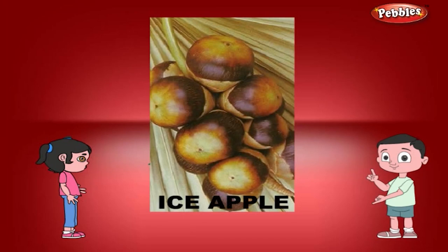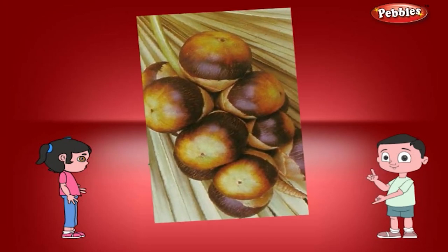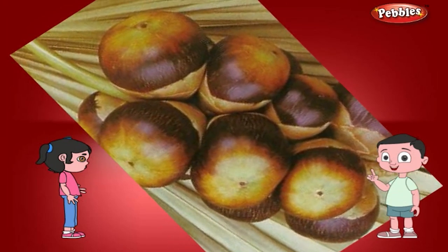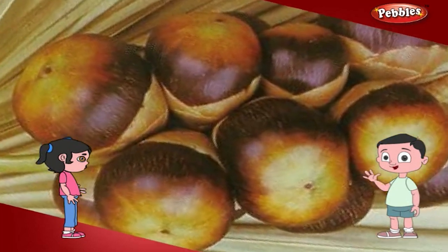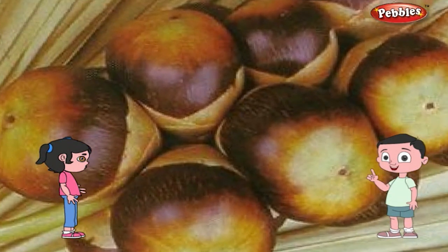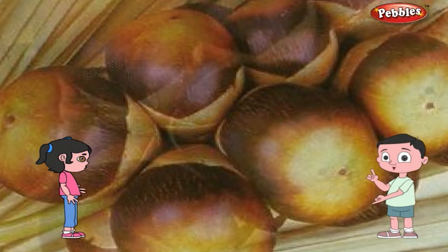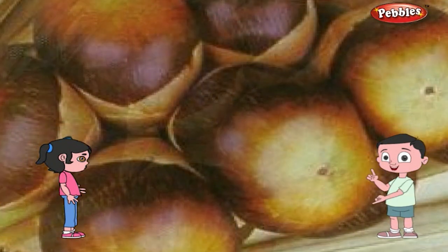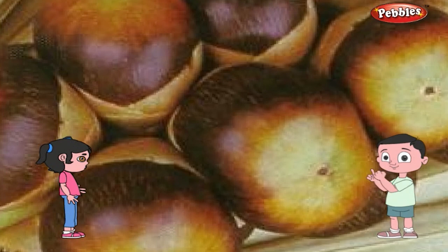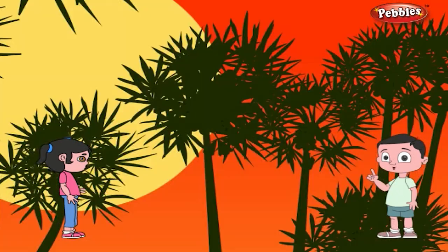The ice apple is given its name because it is white in colour like ice. Its outer shell is hard and woody, and is dark brown and green in colour.